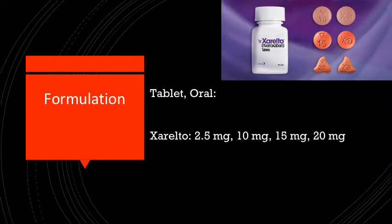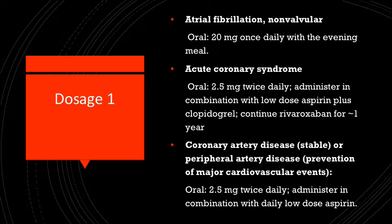Formulations for Rivaroxaban include oral tablets of the strengths 2.5, 10, 15, and 20 milligrams. The dosage for Rivaroxaban in individuals with atrial fibrillation is an oral dosage of 20 milligrams once daily in the evening with meals.